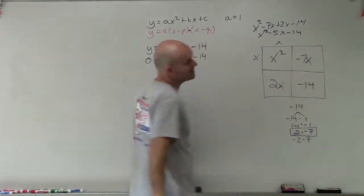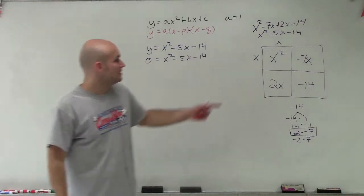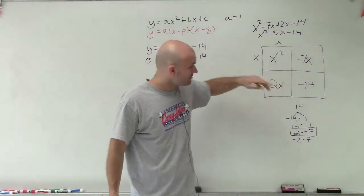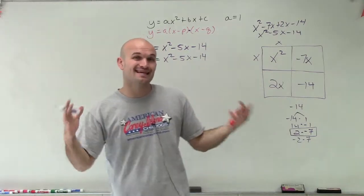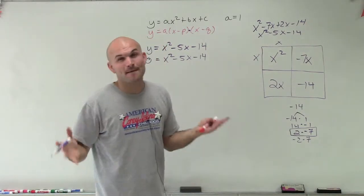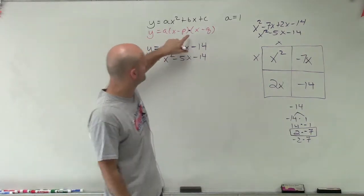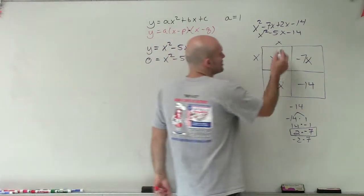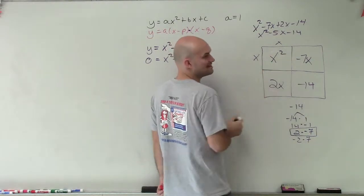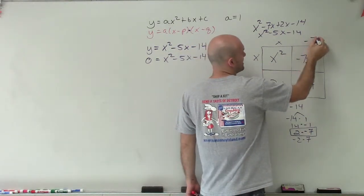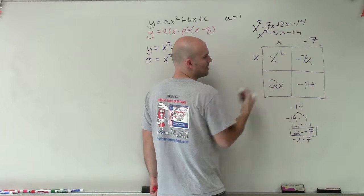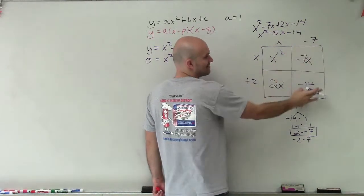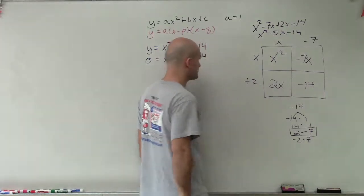So everything that's represented in that box right now is the area, adds up to here. But we're not concerned about the area. We're concerned about what are the side lengths of this box that I'm multiplying by to give us the factors, which is going to give us an equation that's in this form. So if I know x times x gives us x squared, x times what gives me negative 7x? Well, that would be a negative 7. And then x times what gives me 2x? Well, that'd be a positive 2. And then 2 times negative 7 would be the area of this box, which is negative 14.